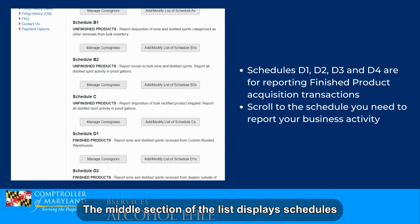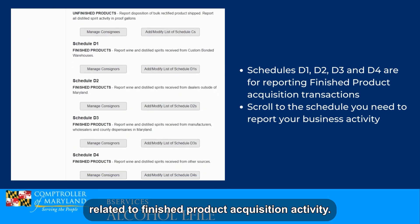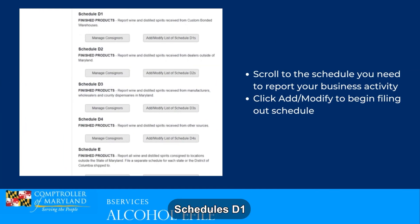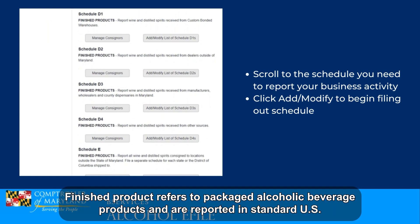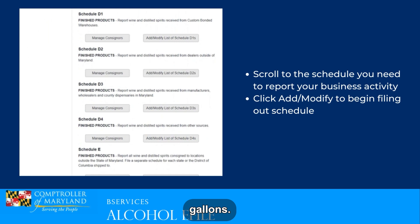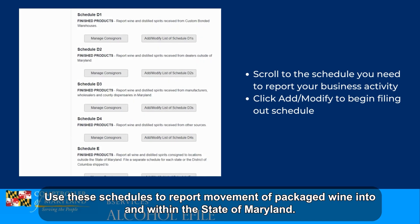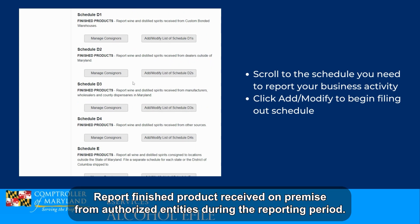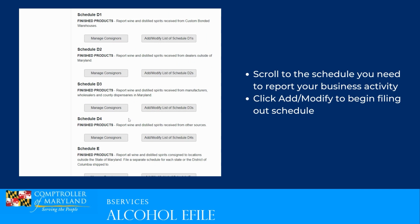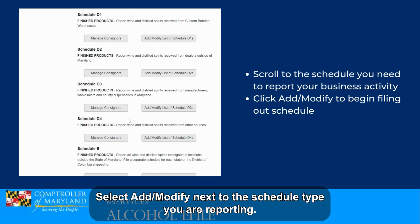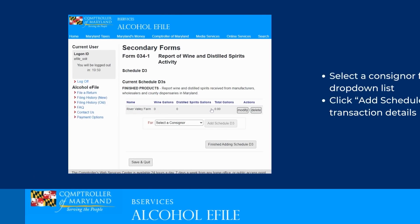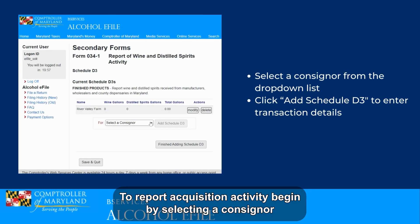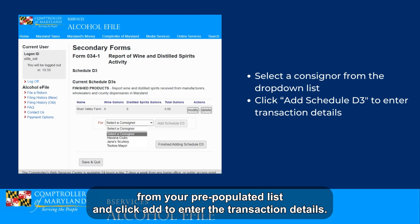The middle section of the list displays schedules related to finished product acquisition activity. Schedules D1, D2, D3, and D4 are used to report receipts of finished product from authorized entities. Finished product refers to packaged alcoholic beverage products and is reported in standard US gallons. Use these schedules to report movement of packaged wine into and within the state of Maryland. Report finished product received on premise from authorized entities during the reporting period. Select Add/Modify next to the schedule type you are reporting. As a manufacturer, you will have limited acquisition activity of finished products. To report acquisition activity, begin by selecting a consignor from your pre-populated list and click Add to enter the transaction details.